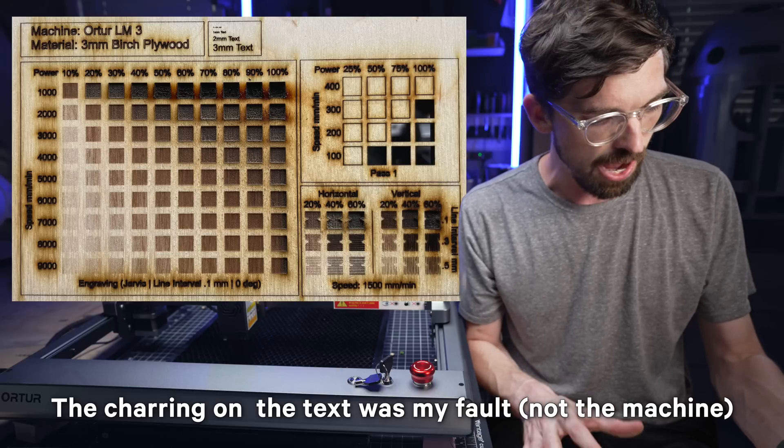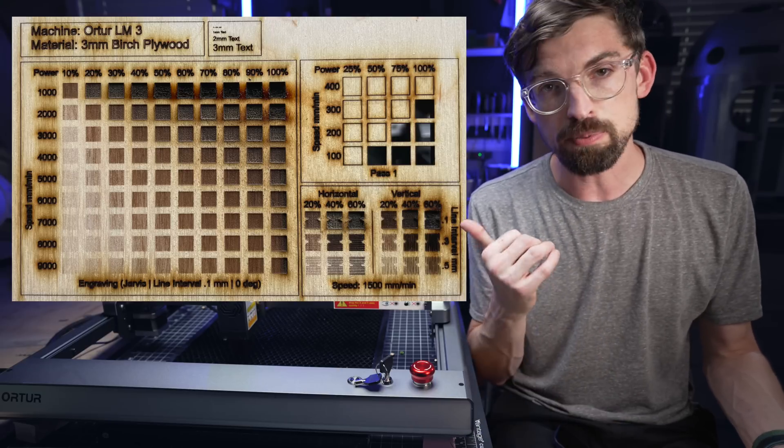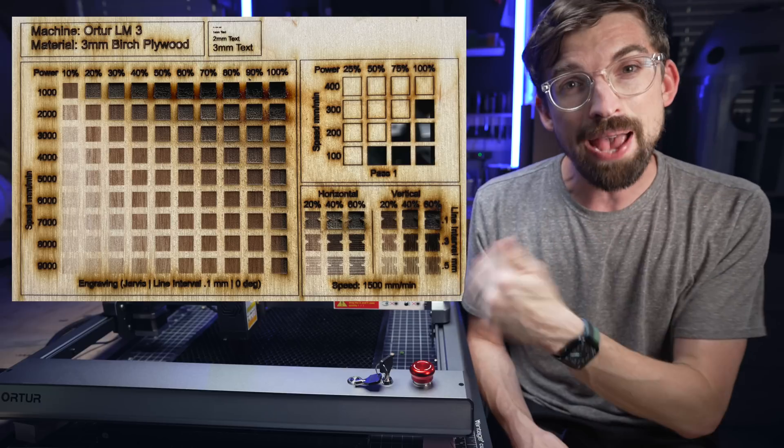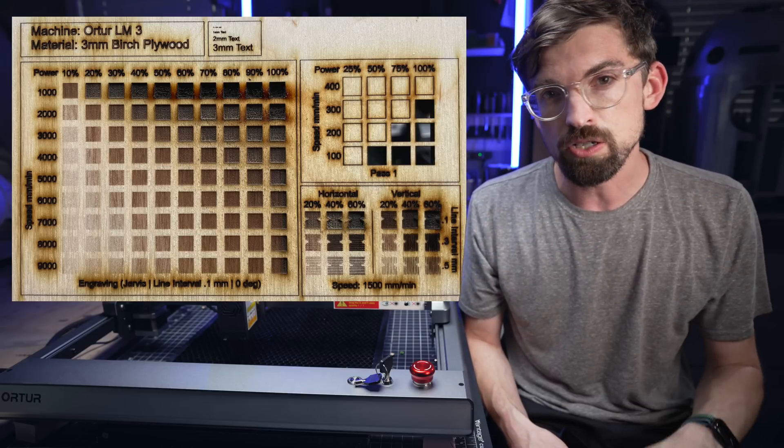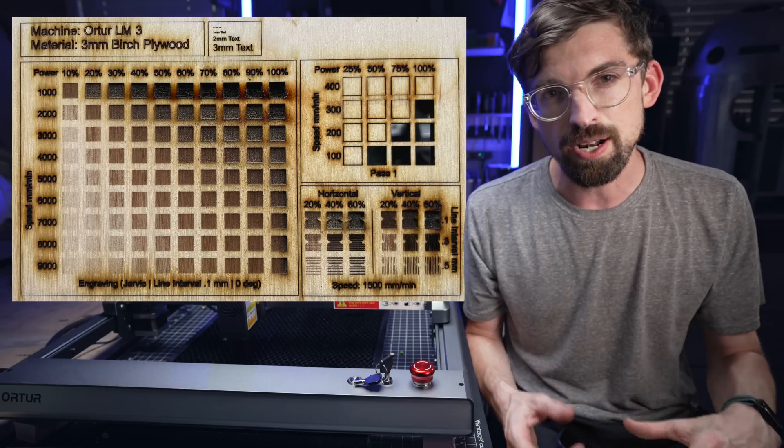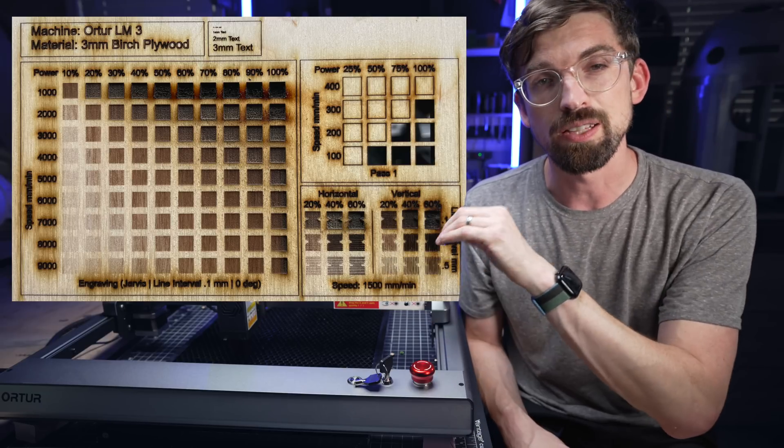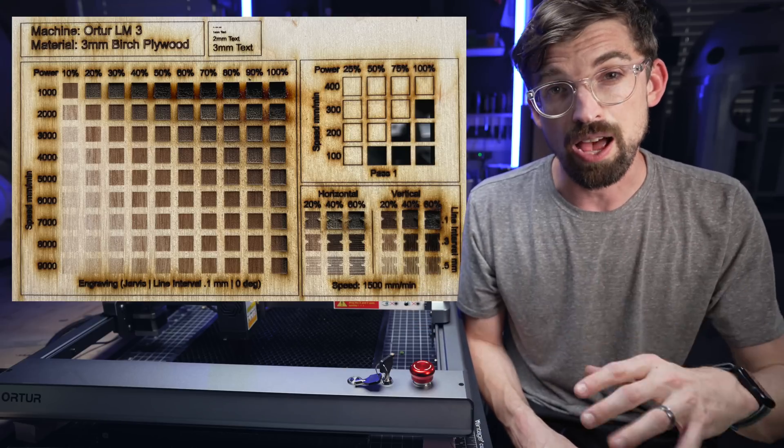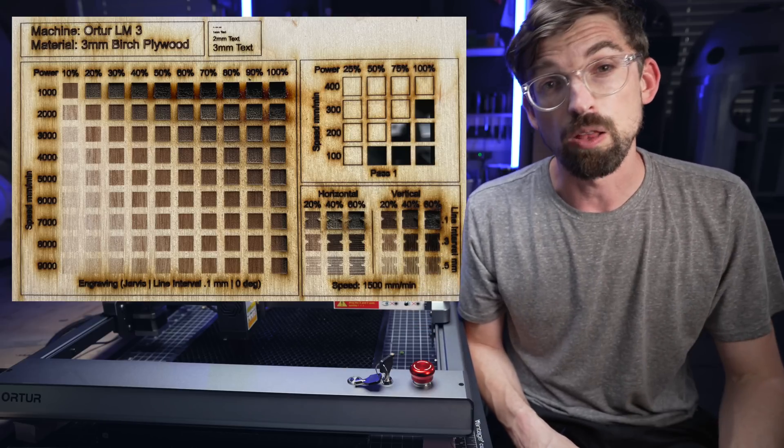You're actually getting marking at 10% power all the way up to 9000 millimeters per minute. Now again, the max speed is 20,000 millimeters per minute. But a lot of times I don't run it that fast because I also don't want to run the laser at full power, which causes the life of it to go down a lot faster than when you're running it at lower settings.